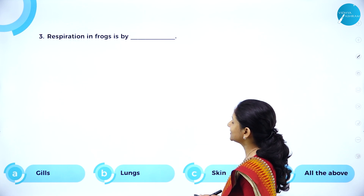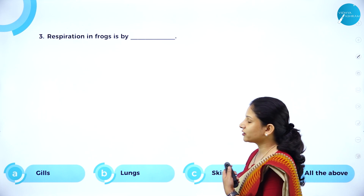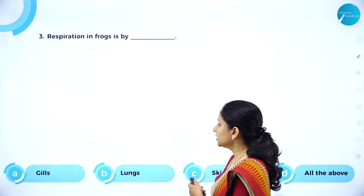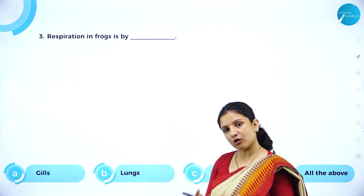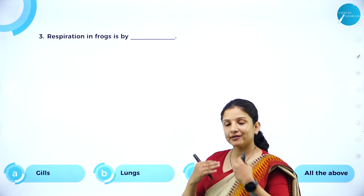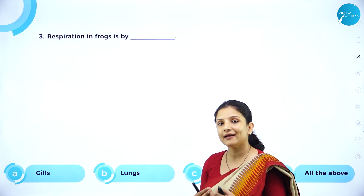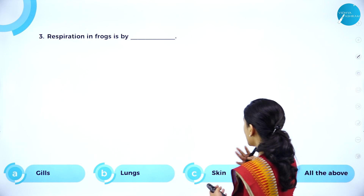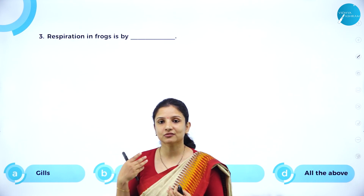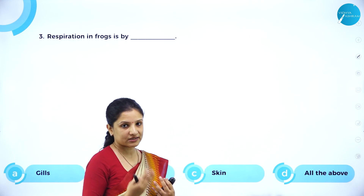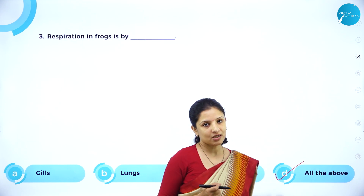Next: Respiration in frogs is by gills, lungs, skin, or all of the above? Since amphibians live in water as well as on land, when they are in water they need gills for respiration, when they are on land they need lungs for respiration, and frogs especially also use their moist skin which has pores for respiration. Therefore, all of the above is the right option.